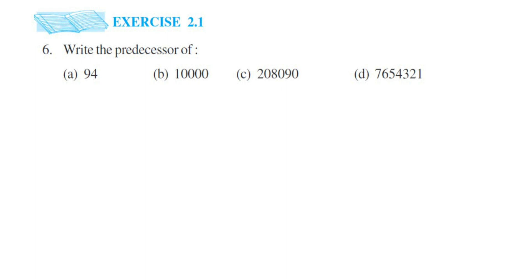Hey everyone, this is a question from Exercise 2.1, Question 6. This question is opposite to the fifth question - the fifth question asked about the successor, and this question asks about the predecessor. We have four questions where we have to write down the predecessor of the given number. So predecessor is nothing but the previous number, like the predecessor of 6 will be 5 - just one number before what we get is called the predecessor of the number.